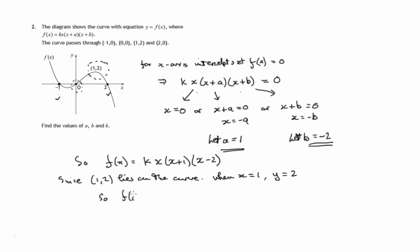So f(1), k times 1 times 1 plus 1 times 1 minus 2, when we substitute x equals 1 in there, we get the value 2. So that gives us k times 2, and that's 2. 1 multiplying by 1 doesn't make any difference. And this factor gives us a minus 1. That all comes to 2.